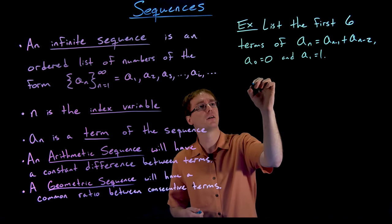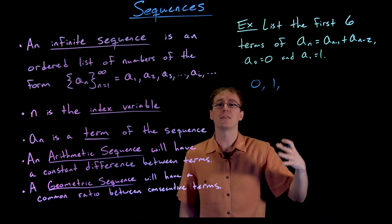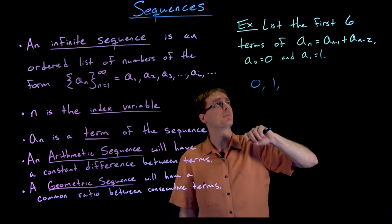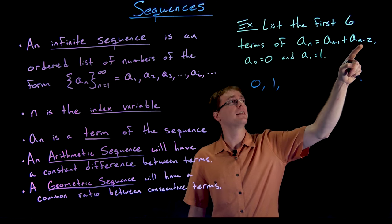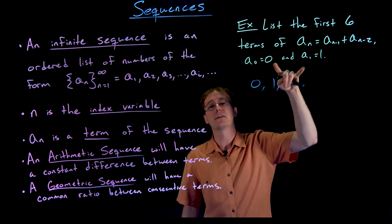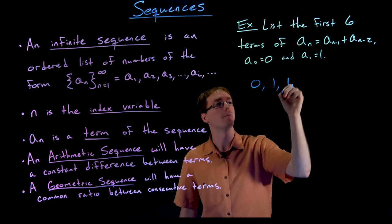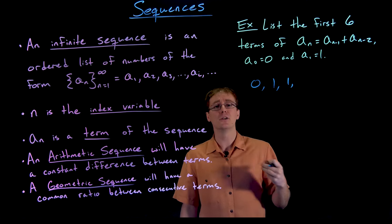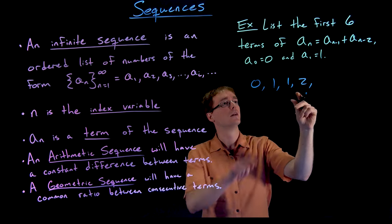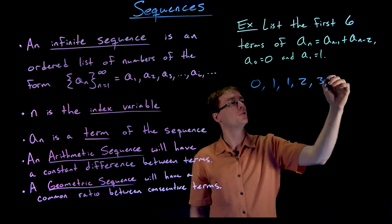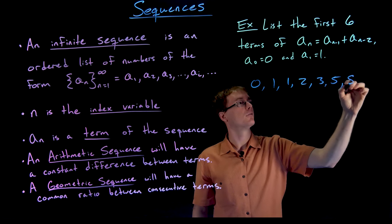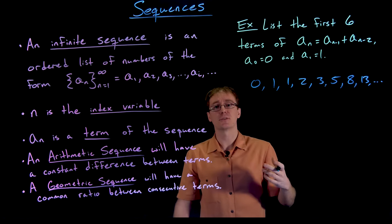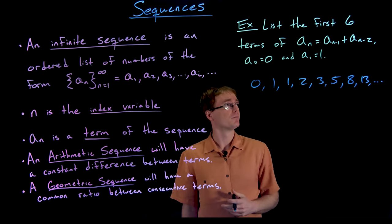The first two terms are already given: zero and one. For a sub two: a sub one plus a sub zero equals one plus zero equals one. Recognizing we just add the previous two terms, we can continue: one plus one equals two, two plus one equals three, three plus two equals five, five plus three equals eight, eight plus five equals thirteen. So the Fibonacci sequence begins 0, 1, 1, 2, 3, 5, 8, 13, and so on.